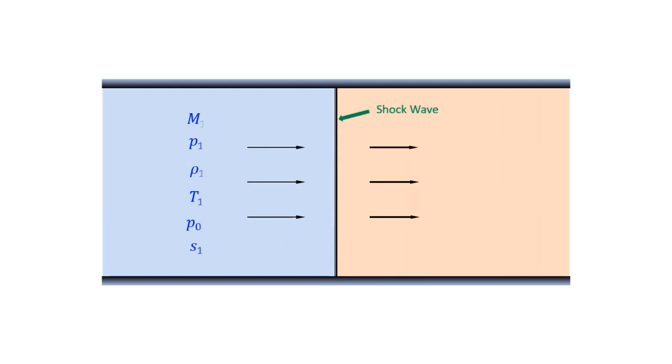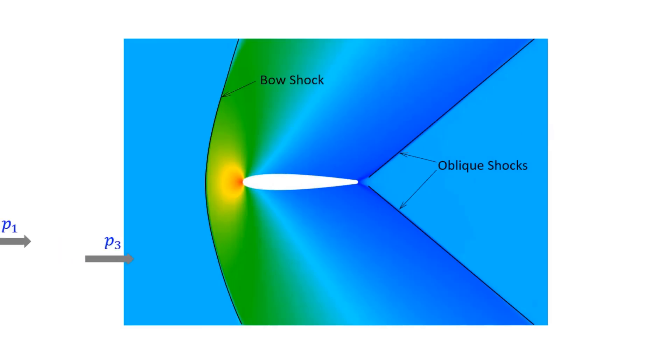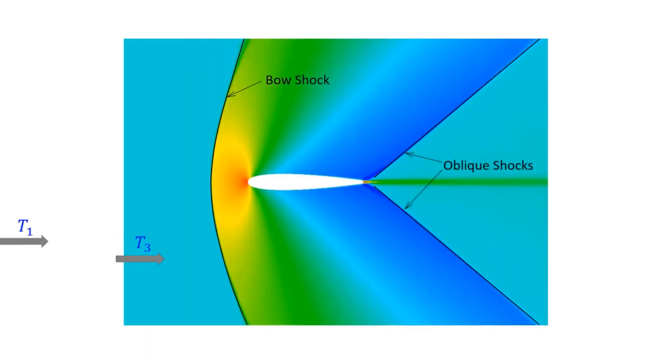Moreover, shock waves result in a sudden change in flow properties across them. For example, the magnitude of static properties such as pressure, temperature and density increase sharply across the shock. And so does the flow entropy.